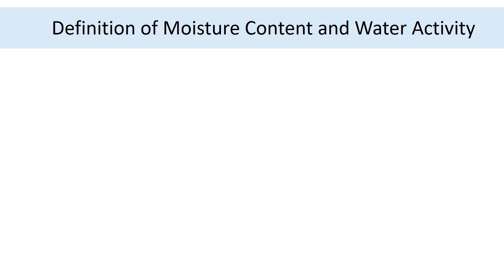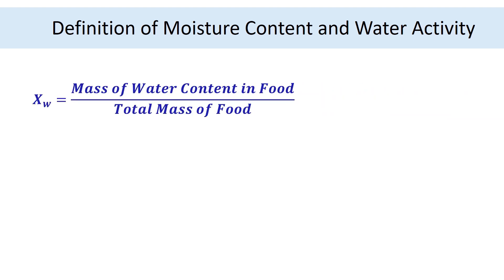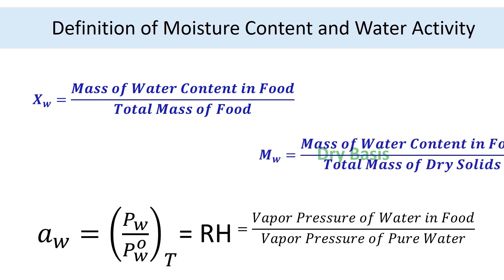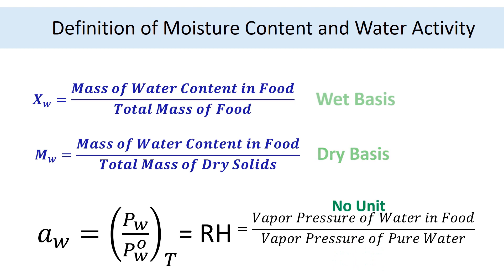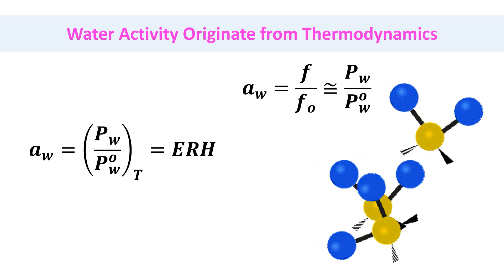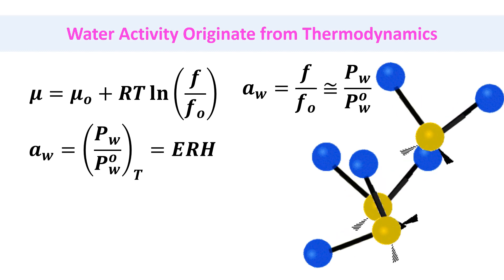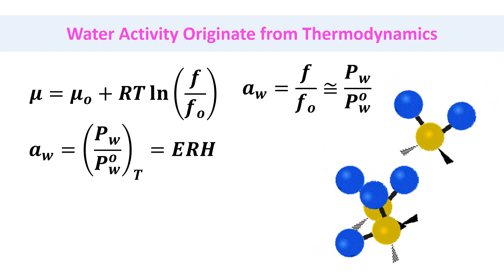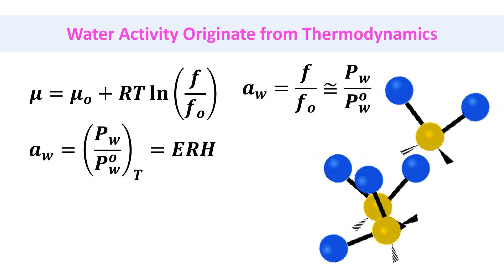Water activity has no unit, while moisture content needs to be presented per unit mass of a sample or per unit dry mass of a sample. Water activity originates from thermodynamics, while water content originates from composition. Thank you for watching this video until the end.